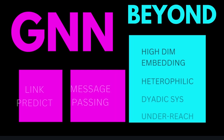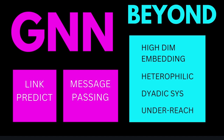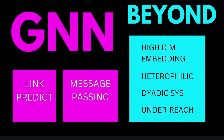If you remember my last video, I was talking about a classical GNN. The task was link prediction, or message passing as a workhorse. And if we wanted to go beyond and faster, we encountered a problem in embedding heterophilic dataset feature sets in a dyadic system, because a graph is just an edge between two vertices.